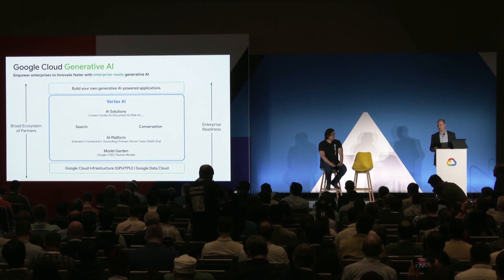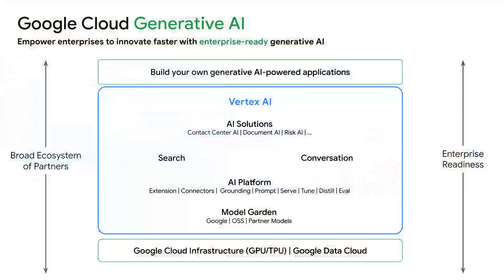Google Cloud provides customers with a complete set of capabilities and solutions. This is a diagram of our technology stack. Starting at the bottom, we have some of the world's best and most differentiated infrastructure, including our GPU, which has a very compelling price-performance ratio. We also run GPU, as many of you saw from the keynote, with NVIDIA as well.